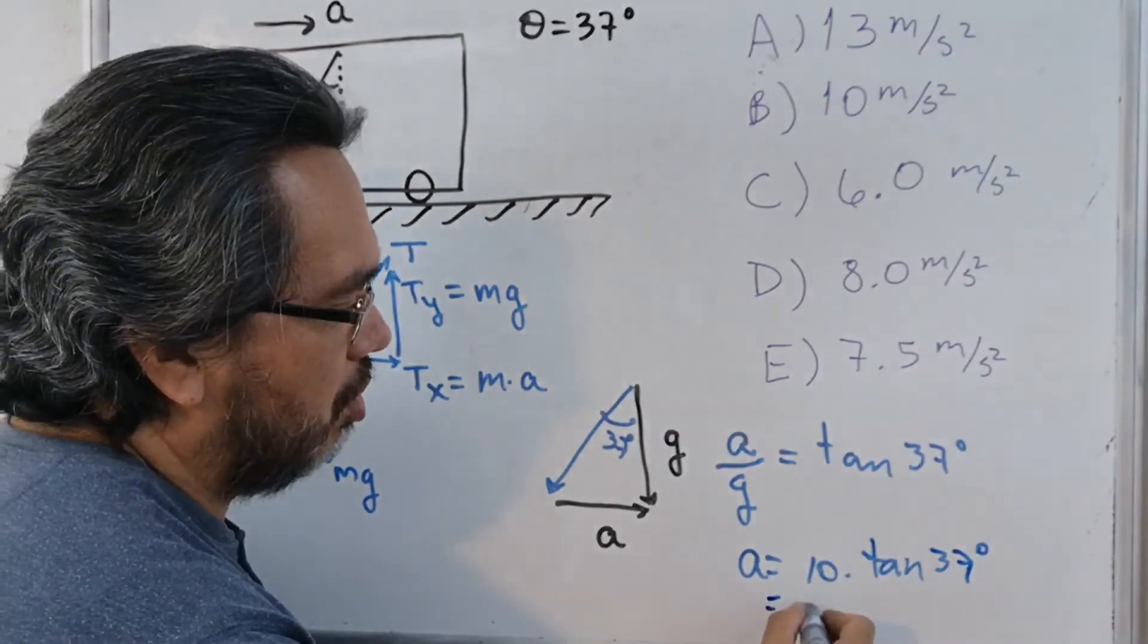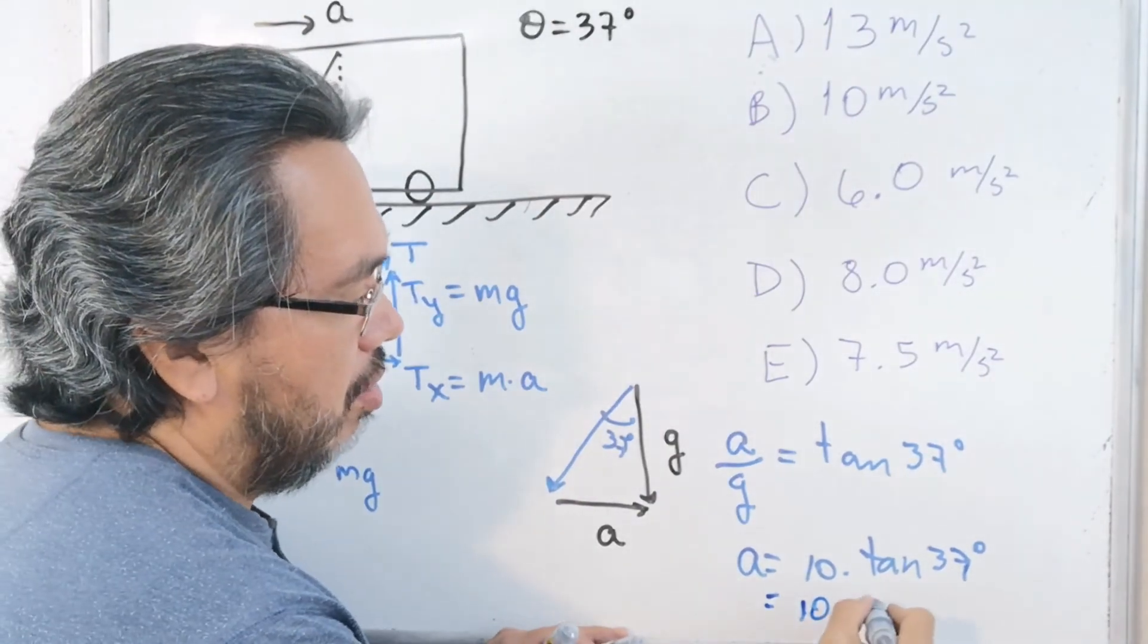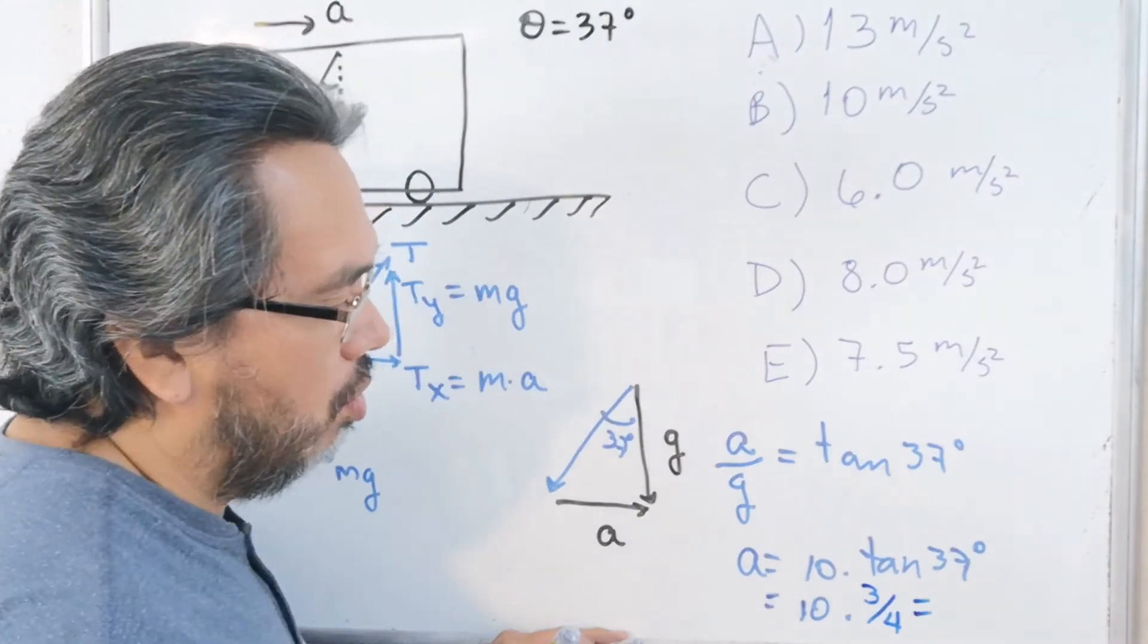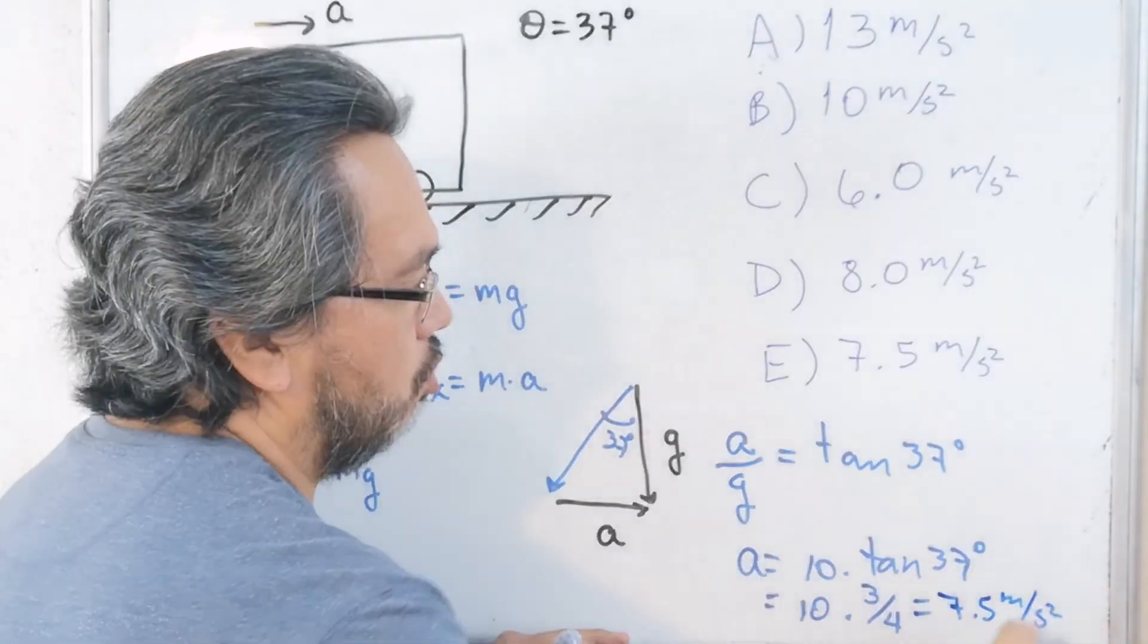Which is approximately, because this is a special triangle, 3 fourths or 7.5 meters per second squared, option E.